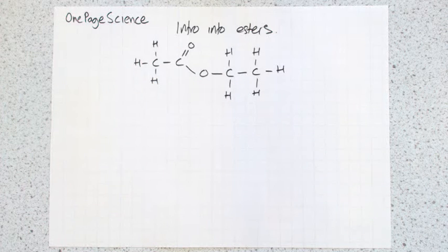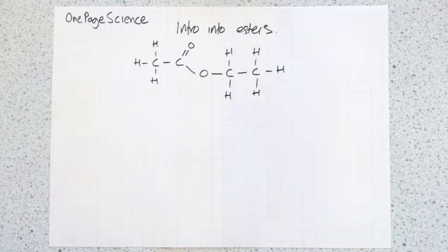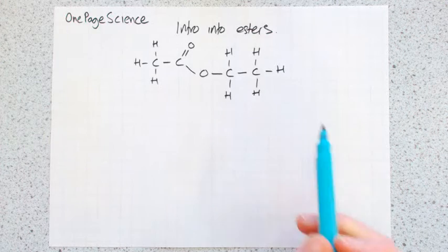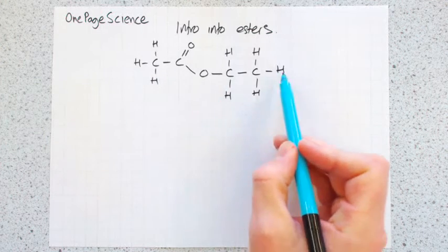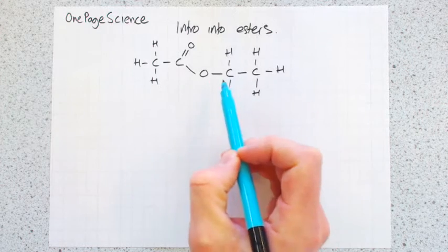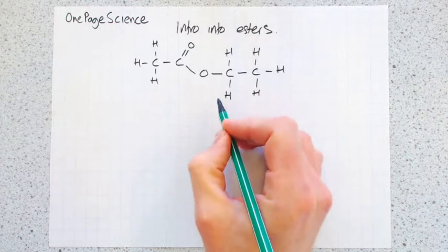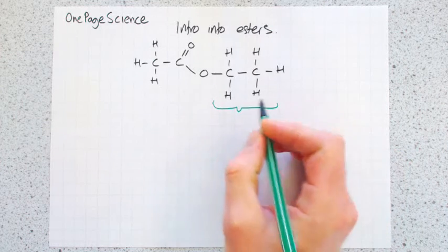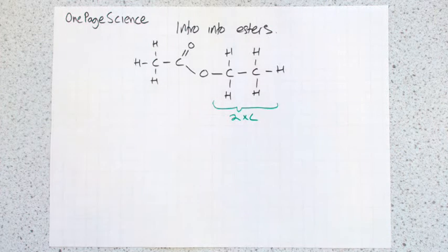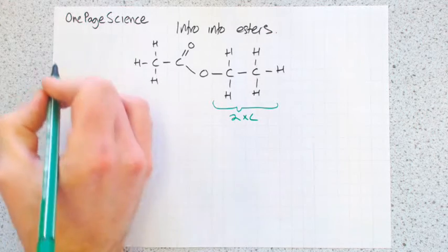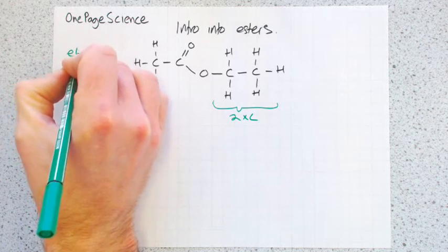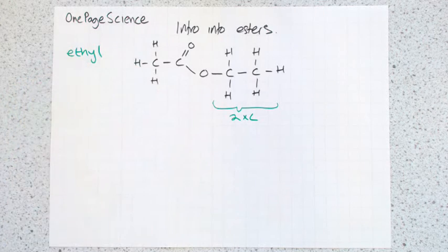Now the way you name these is kind of a bit backwards from how you tend to draw them, in that you're sort of naming it from the right-hand side first. So on this side over here we have two carbons, so two times carbon. So the first part of the name is ethyl.